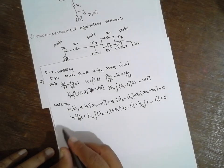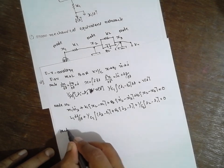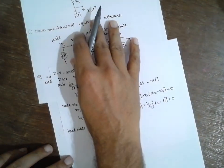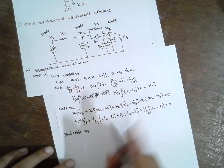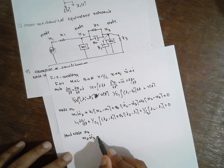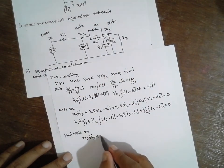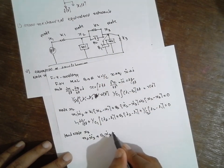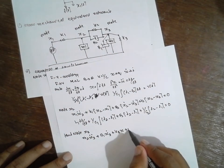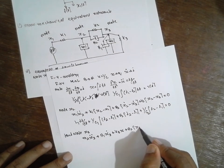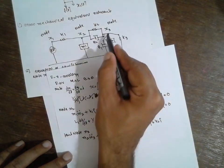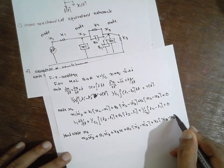Next I will go for node 3. The equation for node 3 is: M2 times x3 double dot, plus B1 times x3 dot, plus K3 times x3, plus B2 times (x3 dot minus x2 dot), plus K2 times (x3 minus x2) is equal to 0.